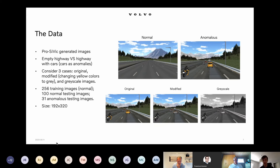We are currently in the experimental phase. During this phase, we can easily manipulate colors and objects in the generation engine. We plan to apply our method on real data, but for now it's only generated data.